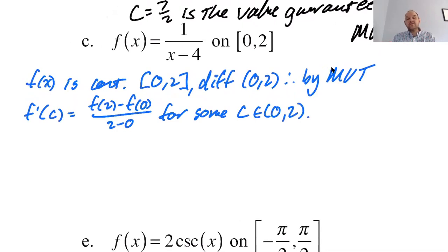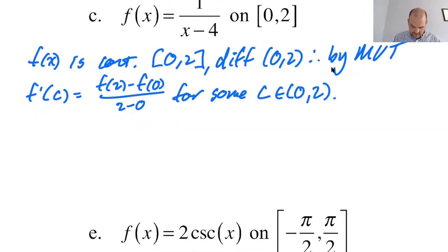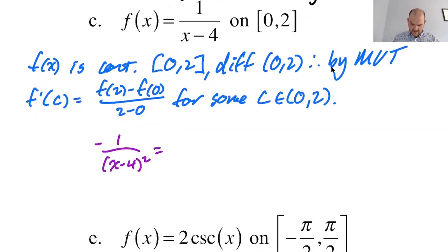By MVT, f prime of C equals F of two minus F of zero over two minus zero for some C. This, I would argue is actually the most important part, where you're writing it out and thinking about what you're doing and hopefully doing it right. That's all the mean value theorem tells you. It doesn't tell you how to find it. We're just going that extra mile because that's who we are. So I'm going to switch colors here and say the derivative is negative one over X minus four squared. So I'm thinking of that as X minus four to the negative first.